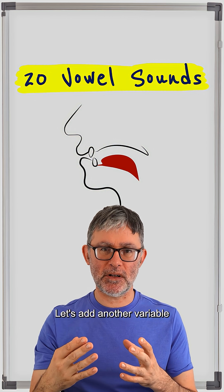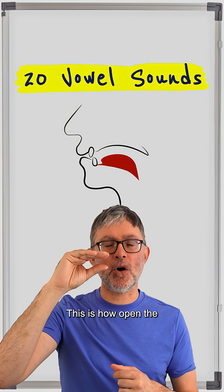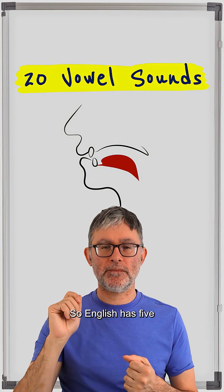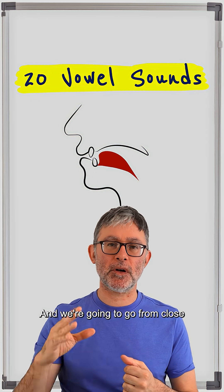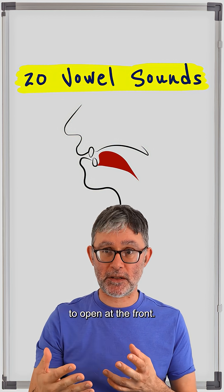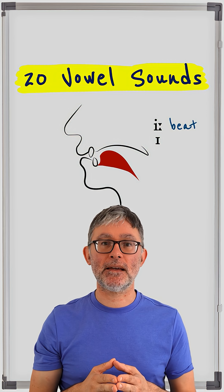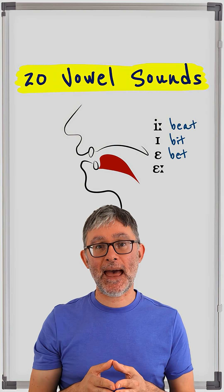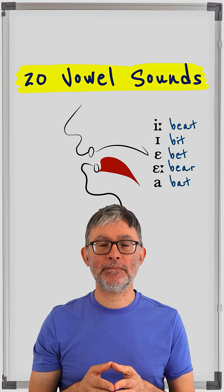Let's add another variable: space. This is how open the mouth or jaw is when we create the vowel sound. English has five front vowels and we're going to go from close to open at the front: 'ee' — beat, 'i' — bit, 'e' — bet, 'air' — bear, 'a' — bat.